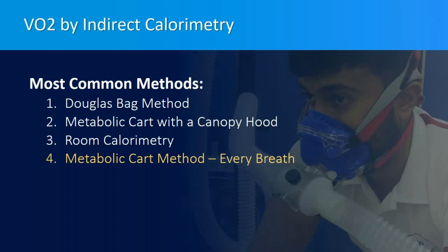The most common methods to determine VO2 by indirect calorimetry are the Douglas-Bag method, which accumulates a number of breaths in a bag to be analyzed later; using a metabolic cart with a canopy hood for resting energy studies; room calorimetry; and for this presentation, measuring every breath using a metabolic cart.